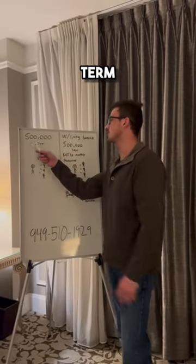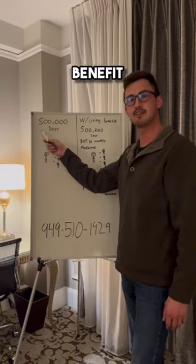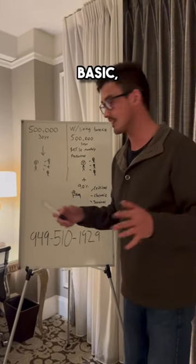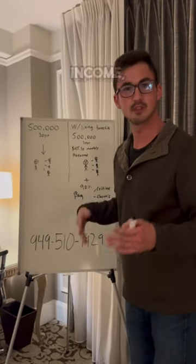Everyone knows about term life, right? You get paid out your death benefit when you pass away. Very basic, your beneficiaries receive that income, usually non-taxable.